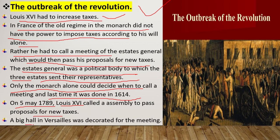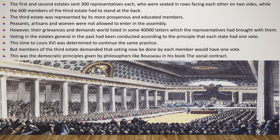For that meeting, a big hall in Versailles was decorated. The first and second estates sent 300 representatives each, who were seated in rows facing each other on two sides, while the 600 members of the third estate had to stand at the back.